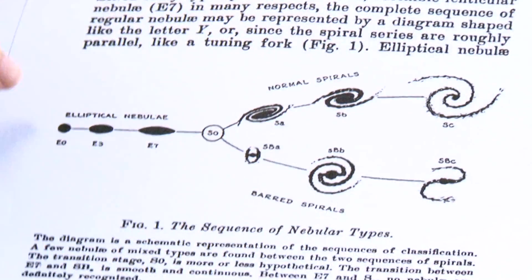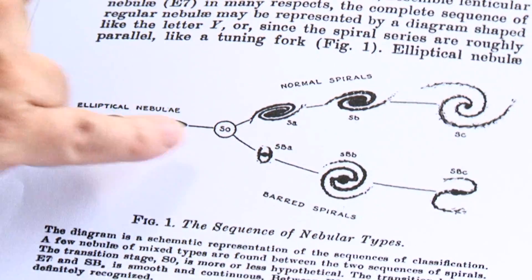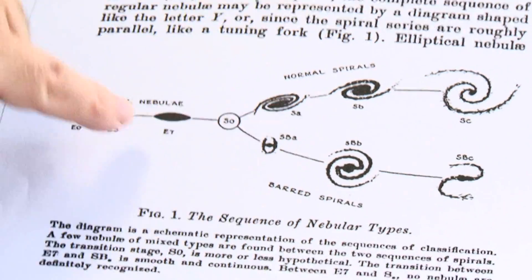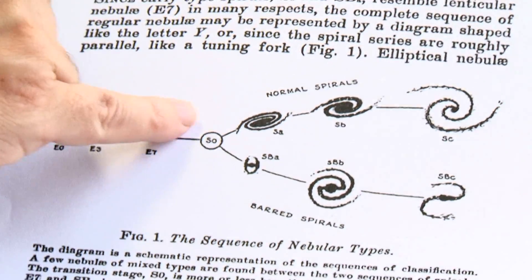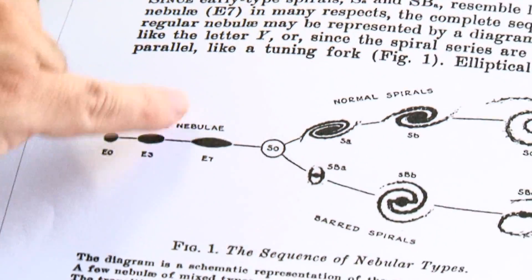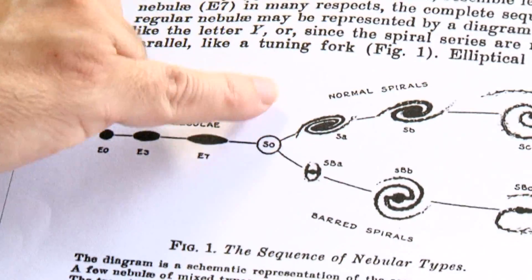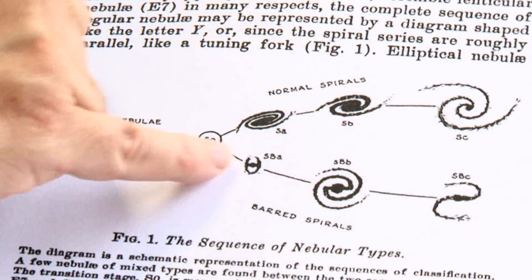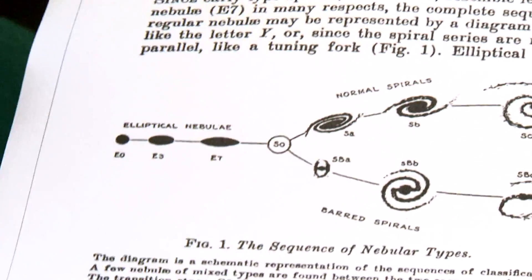He suggested there might be a category in the middle: disk galaxies that have a thin disk but don't have any spiral structure. He arranged them with the boring ellipticals at one end and the beautiful spirals at the other, putting the S0s in the middle. But notably, he drew little cartoons for all the others — for S0 he just drew a little round circle with 'S0' in it.